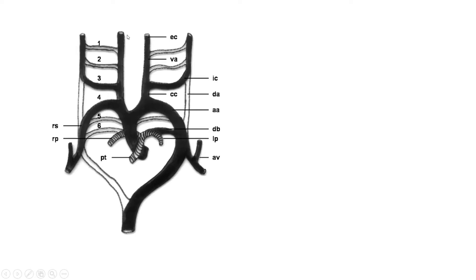In the middle there will be the gut, that is the alimentary tract. Anterior to the alimentary tract there will be an artery called the ventral aorta, and posterior to that there will be another artery called the dorsal aorta. These two will be connected by aortic arches, and there will be six pairs of aortic arches on both sides.